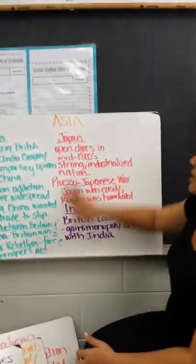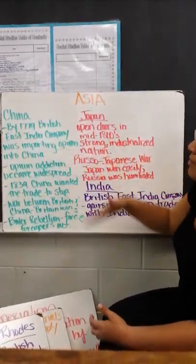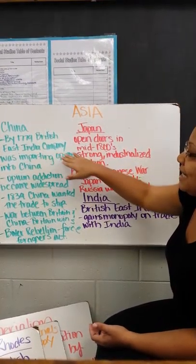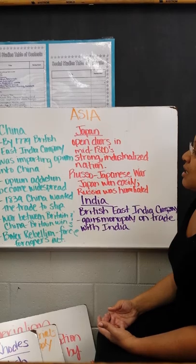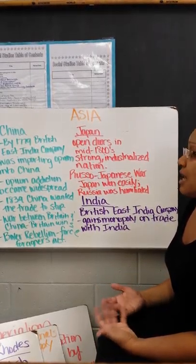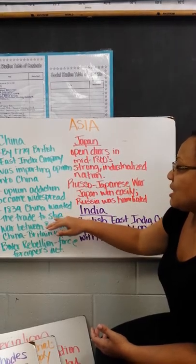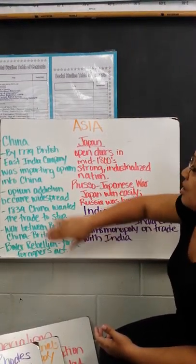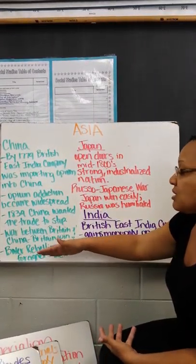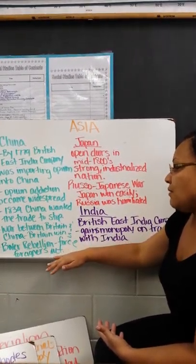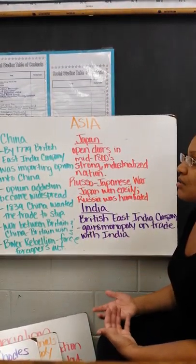Now let's switch from Africa to Asia. China closed its doors, but by 1779 it did open up trade with the British government. The British East India Company was importing opium into China, which is a very addictive drug — like heroin. They made a lot of money because many Chinese were buying it, and opium addiction became widespread. China did not like that. In 1839, China wanted trade to stop with the British East India Company, so a war started between Britain and China. Britain won and gained some land. Later, there was a Boxer Rebellion where they tried to force foreigners out, but that was not successful, so Britain and the foreigners remained in China.